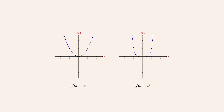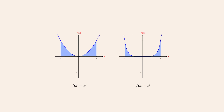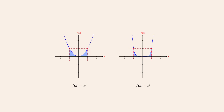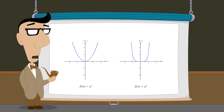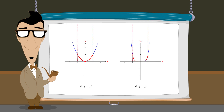For values of x between one and negative one, we can see that a monomial with a larger exponent has smaller values. However, as x becomes greater than one or less than negative one, a monomial with a larger exponent increases more rapidly. As the exponent of a monomial becomes larger, its graph becomes flatter for x values between one and negative one, and steeper for values of x greater than one and less than negative one.